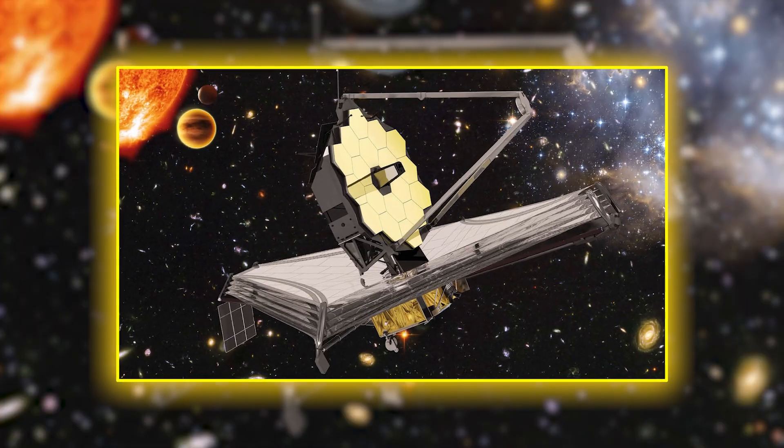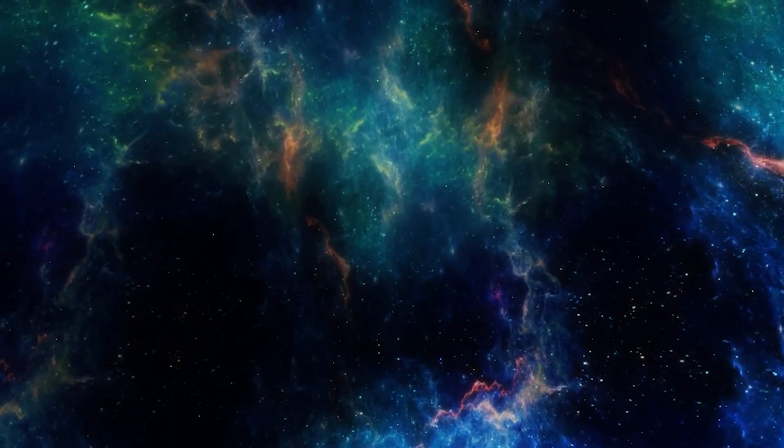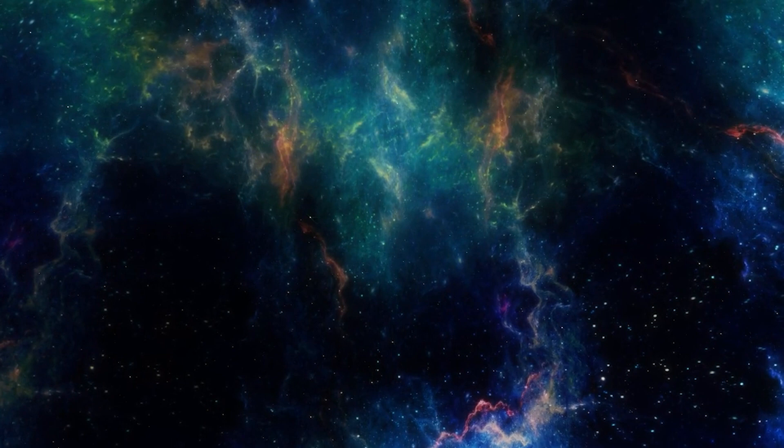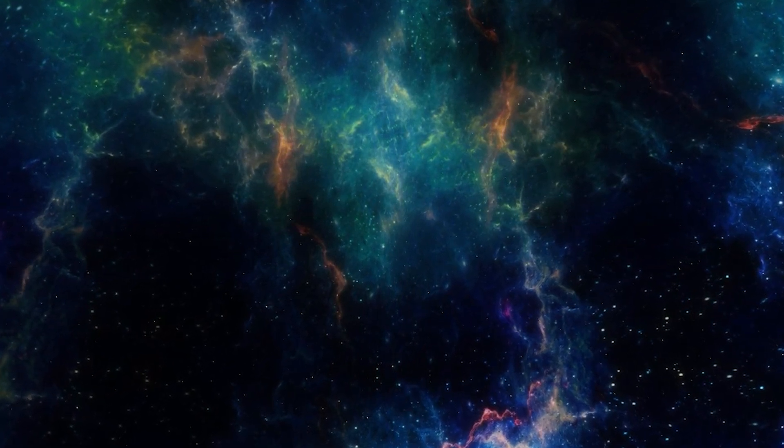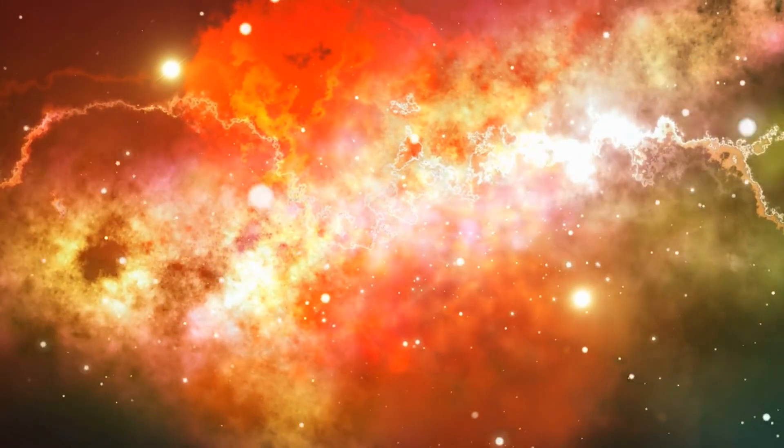What the James Webb Telescope found is not just one object or one distant galaxy. It's a sprawling ancient tapestry of proto-structures that may represent the earliest, most primitive frameworks of galaxy formation, appearing less than 300 million years after the Big Bang.